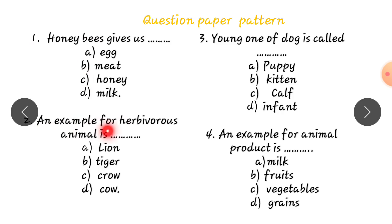An example for herbivorous animal is. Herbivorous is they are plant-eating animals. Lion, Tiger, Crow, Cow. Correct answer is Cow. Select the answer D. Cow.